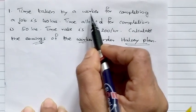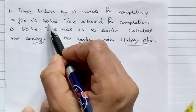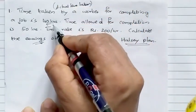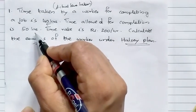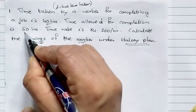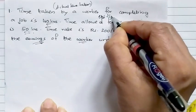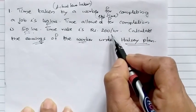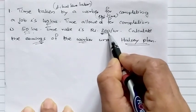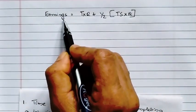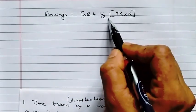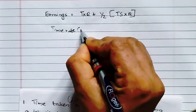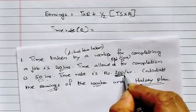Given: Actual time taken by the worker, T = 40 hours. Time allowed for completion (Standard Time), S = 50 hours. Time rate, R = Rs. 200 per hour. Therefore, Time Saved, Ts = Standard Time − Actual Time Taken = 50 hours − 40 hours = 10 hours.